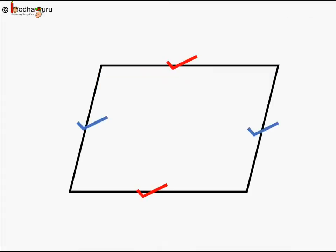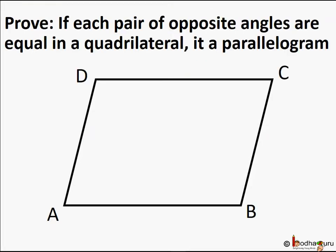Hello friends. In the last lesson we learnt that if each pair of opposite sides of a quadrilateral are equal, then it is a parallelogram. But we also know that opposite angles are equal in a parallelogram. So let's prove that if in a quadrilateral each pair of opposite angles are equal, then it is a parallelogram.